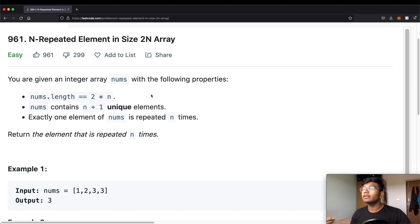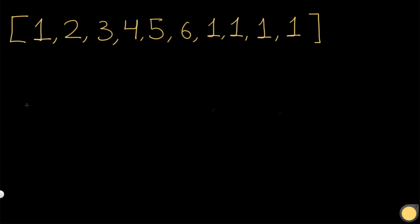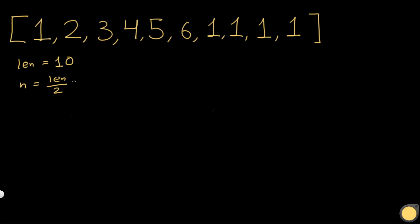Let's take a look at an example to understand it better. Based on all the properties we just saw, let's extract as much information as we can. The array has a length of 10, so N equals the length divided by 2, which is 10 divided by 2, giving us N equals 5. That means the number of unique elements we have is going to be 6.